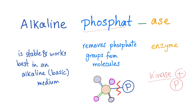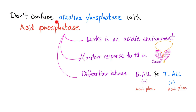Please make sure not to confuse alkaline phosphatase and acid phosphatase, because acid phosphatase is a phosphatase that works in an acidic environment. Acid phosphatase can be used to monitor the response to treatment in cases of prostate cancer. Acid phosphatase is used to differentiate between B-type ALL — acute lymphoblastic leukemia — and T-ALL. In B-ALL, acid phosphatase is negative, while T-ALL is acid phosphatase positive.